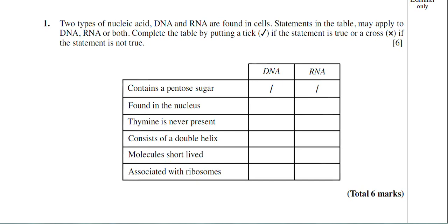Right, found in the nucleus. DNA is definitely found in the nucleus, so that can have a tick. That is a true statement. RNA, a little bit trickier now. Is RNA found in the nucleus? Yes, well, there are different types of RNA. And yes, some types of RNA can be found in the nucleus. So that would be a tick for that as well.